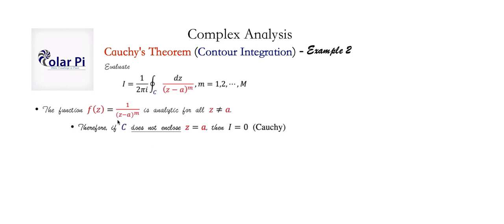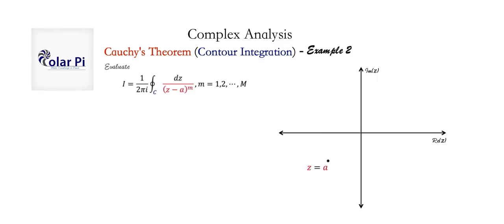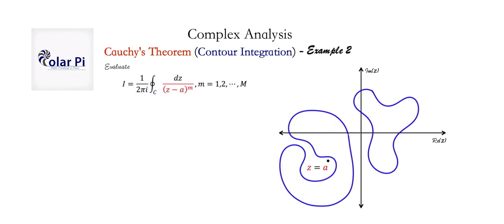There are infinitely many contours that don't enclose z equals a, and on all of those this integral is equal to 0. For example, if z equals a is this complex number in the imaginary plane, then this contour surely doesn't enclose it — it's a simple closed contour. And even if the contour got teasingly close to enclosing z equals a, as long as it doesn't, this integral is equal to 0.